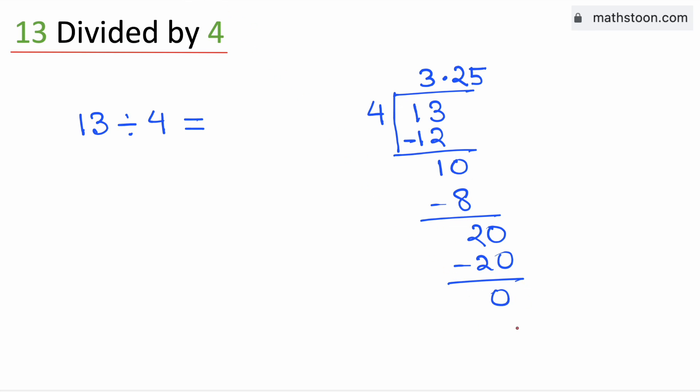As we have obtained the number 0, we will stop. Therefore, 13 divided by 4 is equal to 3.25, and this is our final answer.